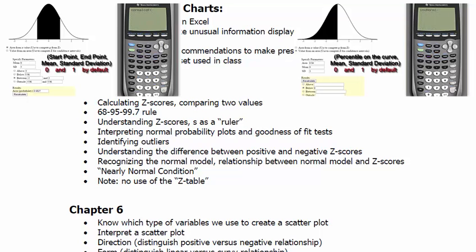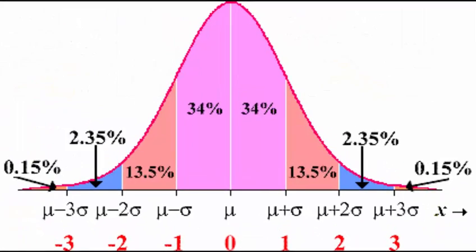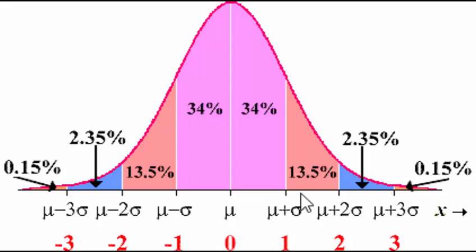Before even looking at applet pictures, try to draw a sketch of what you're looking for. For example, the 80th percentile would fall between z-scores of zero and one. We can verify: the 50th percentile is at the mean, the 84th is one standard deviation above, so the 80th is just below that. The 97.5th is at two standard deviations, and the 99.85th is at three. The 90th percentile has to be between the 84th and 97.5th.